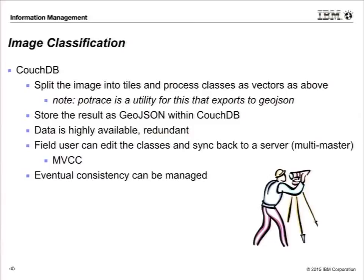What would we do in CouchDB? We split the image into tiles, process the classes as vectors exactly the same as before. PoTrace is an excellent raster-to-vector utility — we tried GDAL Polygonize, tried a few commercial tools, and PoTrace was the fastest. The nice thing about PoTrace is it exports GeoJSON, and from that we can install it inside CouchDB — one node, three copies of the data for redundancy. Data is now highly available, redundant, distributed over the whole world. In the field, if the water has subsided since the satellite pass, I can edit that class and using MVCC — multi-version concurrency control — push back to the server as a master.